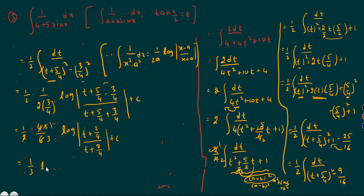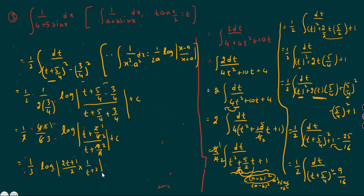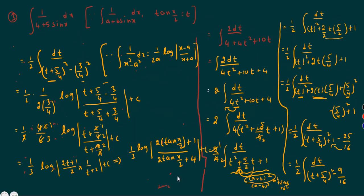Cancelling common factors: 1/3 log mod of (2t plus 1) by (t plus 2) plus c. Now substituting back t equals tan(x/2), the final answer is 1/3 log mod of (2·tan(x/2) plus 1) by (tan(x/2) plus 2) plus c. If you have any doubt, please comment in the comment section.